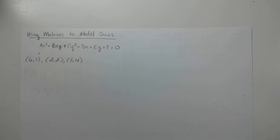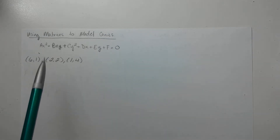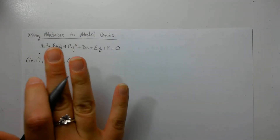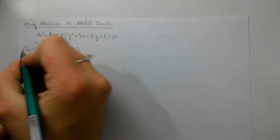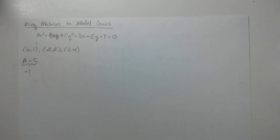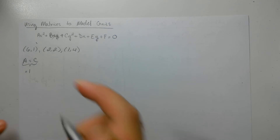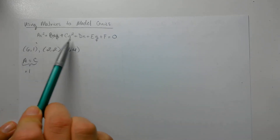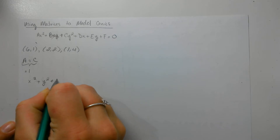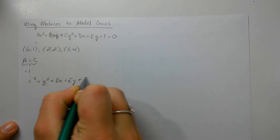Looking at our formula, we have bxy, and that's your rotation component. We're not going to use that for my first three examples — I'll show you an example that does use it closer towards the end. So we're going to ignore this for a little bit. When thinking of a circle, a is equal to c, and not only is a equal to c, but it's also equal to 1. So your a value and your c value equaling 1 gives you an implied one on your a and c terms, leaving you with: x squared plus y squared plus dx plus ey plus f equals 0.